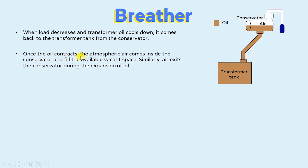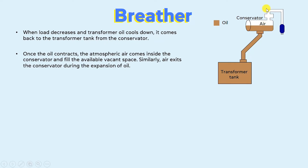Once the oil contracts, the atmospheric air comes inside the conservator and fills the available vacant space. During normal conditions, when the oil from the conservator comes back to the transformer tank, the vacant space in the conservator is fed by the atmospheric air. Similarly, air exits the conservator during the expansion of oil — when the transformer oil gets heated and expands, atmospheric air exits through the conservator.